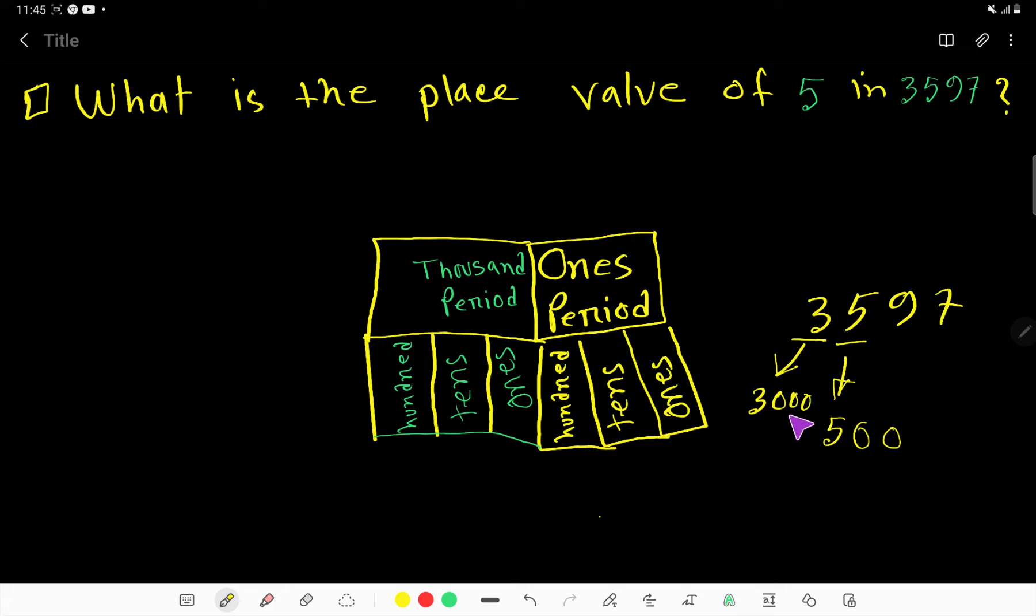So 3000. And the place value of 5 is 500. However, let me show you another method. I think this method is quick, but let me make you understand.